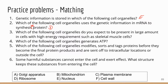Number three: which of the following cell organelles would you expect to be present in large amounts in cells with high energy requirements, such as skeletal muscle cells? Energy — the powerhouse — that's mitochondria, answer B. Number four: which of the following cell organelles generates ATP? ATP is the rechargeable battery, so which organelle is involved in energy production? Mitochondria again — I was trying to trick you, so mitochondria is the answer for two questions.